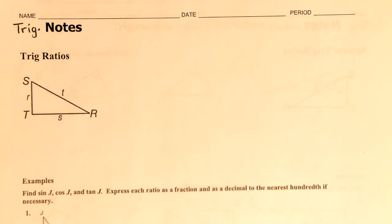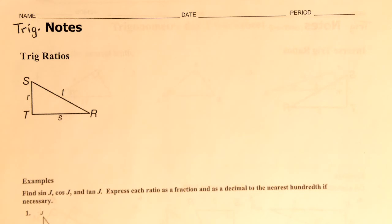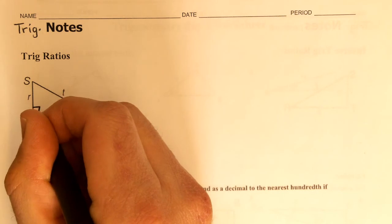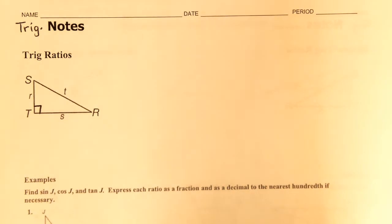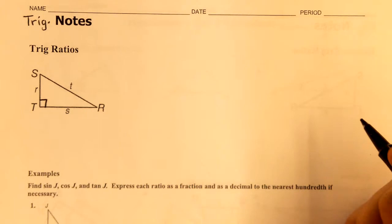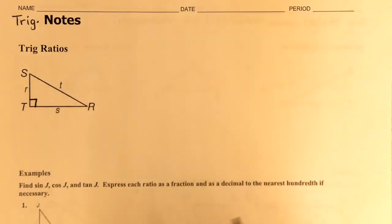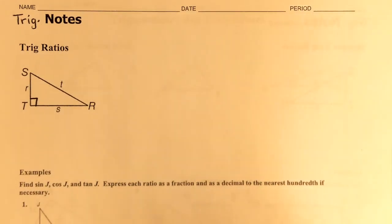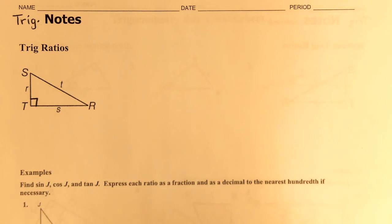We're going to talk about trigonometry and right triangles. You've learned the Pythagorean theorem, which helps you find missing side lengths in right triangles. We're going to talk about another way to find missing side lengths and how the side lengths of triangles are related to the angles. Remember that a right triangle has a 90-degree angle — everything we discuss today only applies to right triangles.